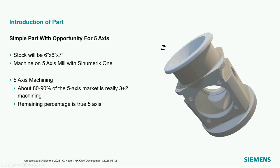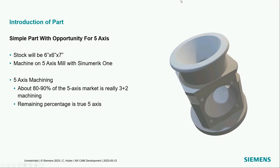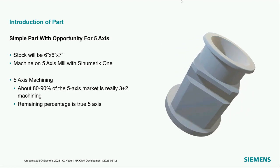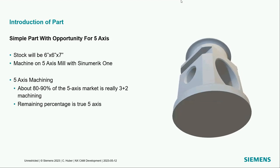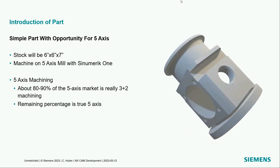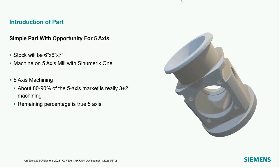Now for the CAD/CAM process chain: the example part today is a relatively simple part with some opportunity for five-axis cutting. The stock is rectangular — six inch by six inch by seven inch — and the part is relatively cylindrical. The machine we're cutting on is a five-axis mill with a Sinumerik One controller, which is a demo machine the Siemens team has built. About 80 to 90 percent of the five-axis market is really three-plus-two machining, reducing setups from five or six down to just one or two.